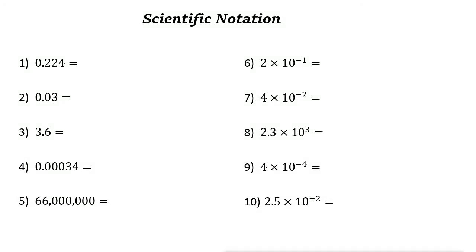Scientific notation is used to write very big or very small numbers in decimal form. In scientific notation, all numbers are written in the form of m times 10 to the power of n, where m is greater than 1 and less than 10 — a one-digit integer.